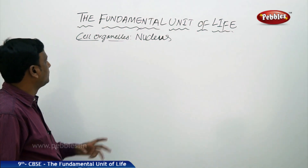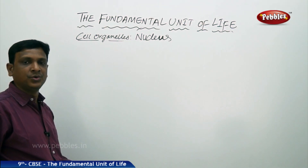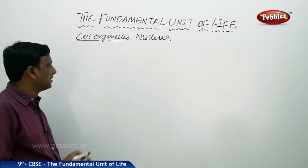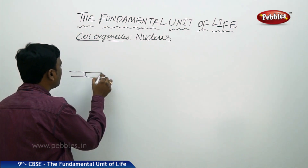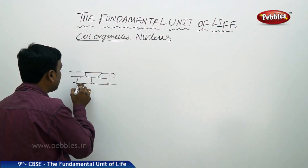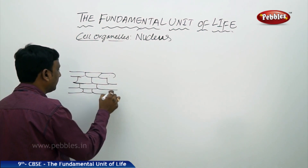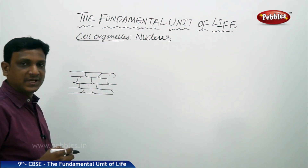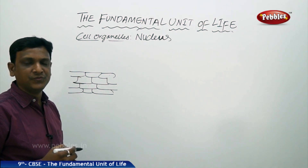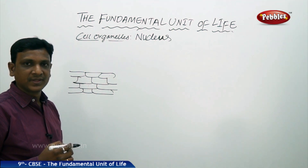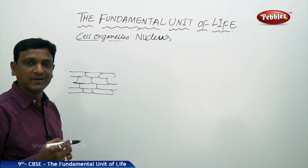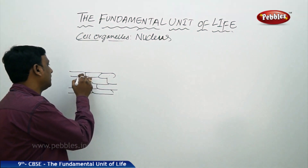The next cell organelle we are going to discuss is the nucleus. Nucleus is the center of the cell and the controller of the cell. We have seen how to prepare a temporary mount of onion peel, where we discussed about staining the cells for better vision and clarity. If you use a high power objective, that is a compound microscope, you will be able to see the onion cells — the cell membrane and something else inside the cell, that is the nucleus.